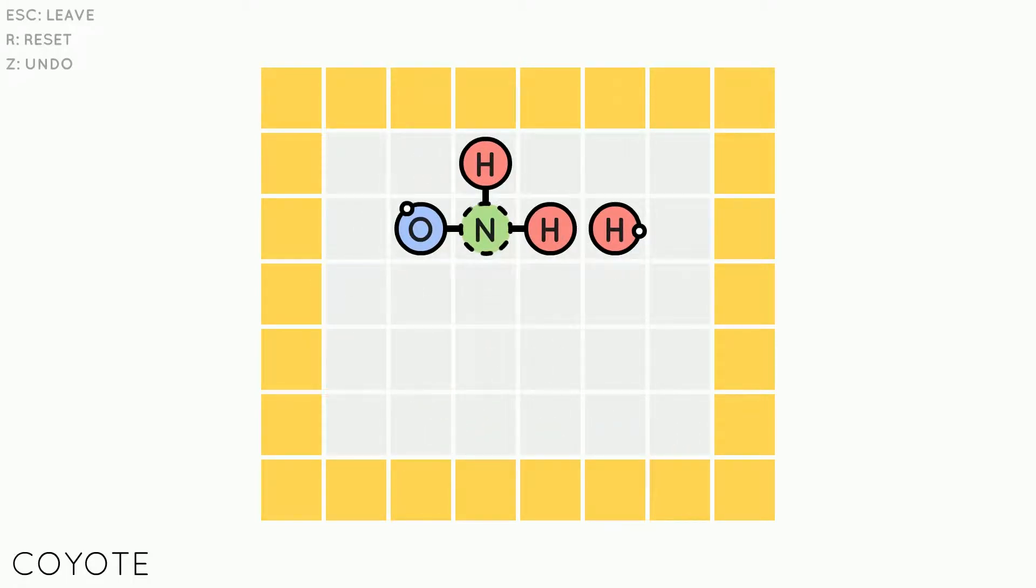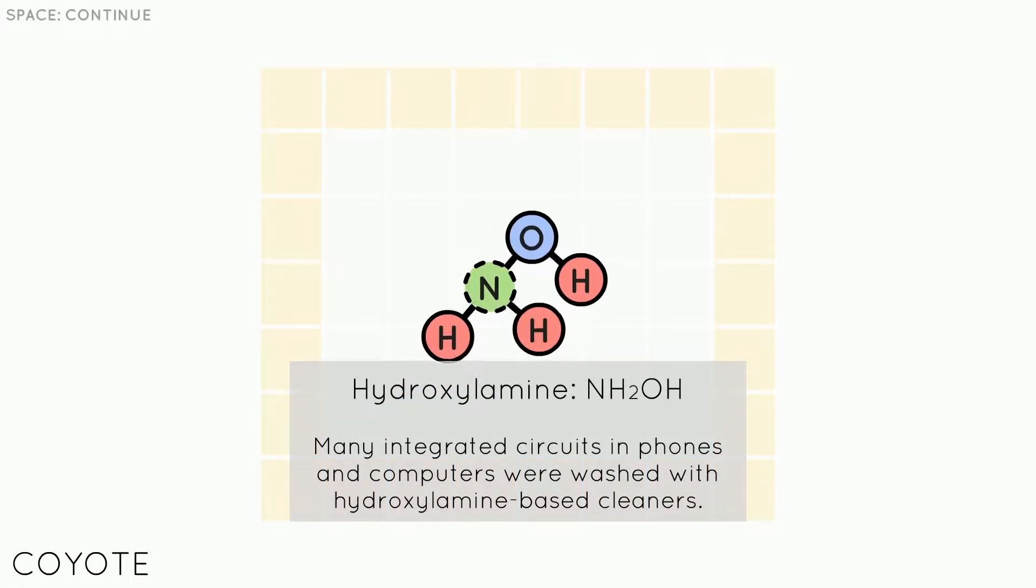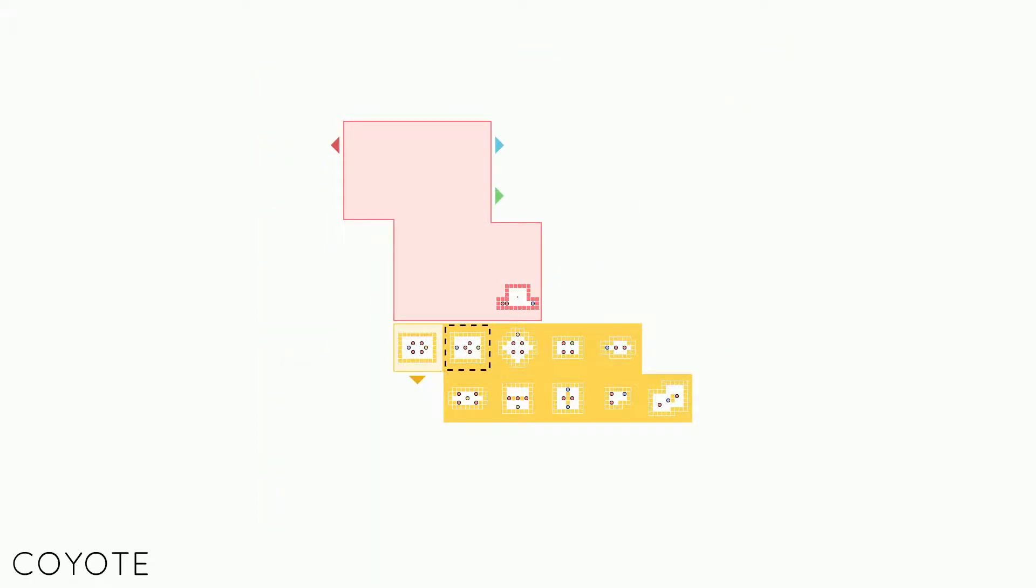Well I didn't know the hydrogens were just attached to each other so that's good to know. So it's not just, oh wait but okay so now the hydrogens don't want to attach to each other, they're just little bastards huh. There we go, okay and then we go down and then we attach that. There we go I made an F, hydroxylamine NH2OH. Oh I get it, so it's NH2 because there's two hydrogen attached to the nitrogen and then OH because there's one oxygen one hydrogen attached to the oxygen anyway. Many integrated circuits and phones and computers were washed with hydroxylamine based cleaners. I know they're washed off with acid so don't eat your motherboard.